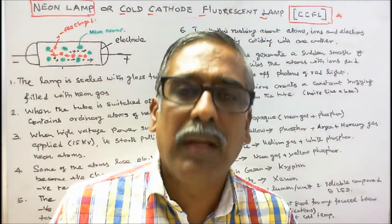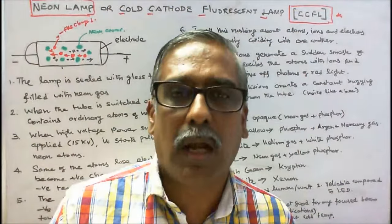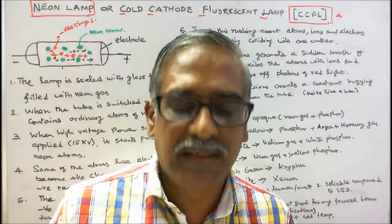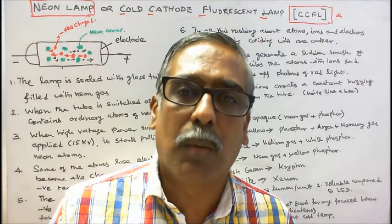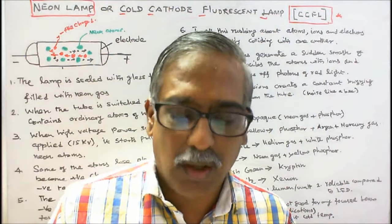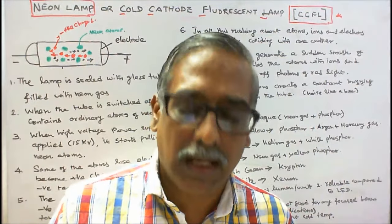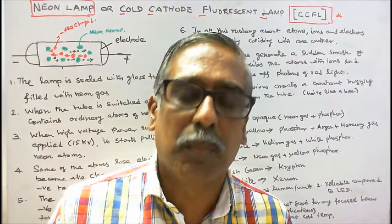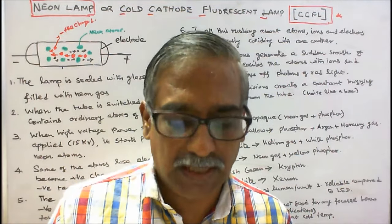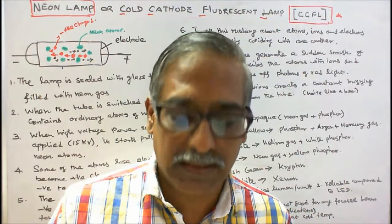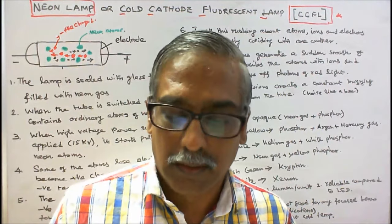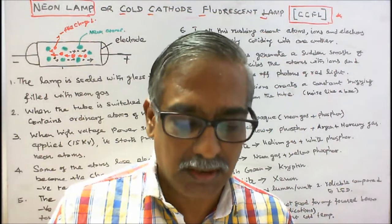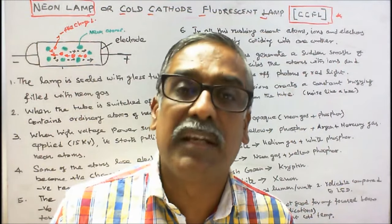Neon is chemically inert and forms no uncharged chemical compounds. Neon is a colorless, odorless, inert monoatomic gas under standard conditions, with about two thirds the density of air.